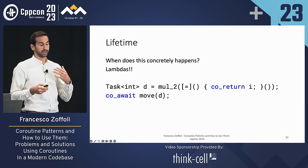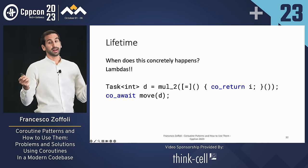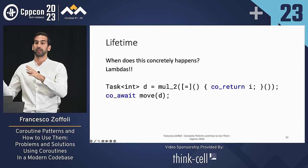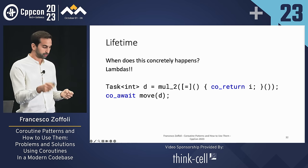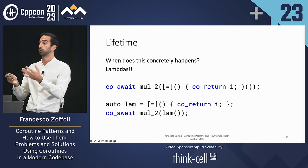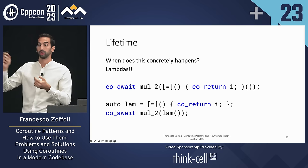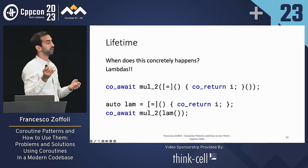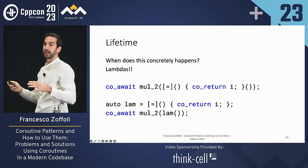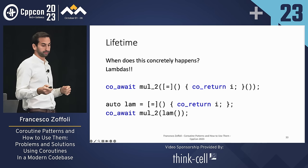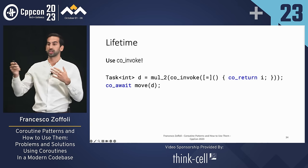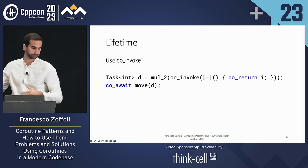Another situation where this happens is with lambdas. We need to remember that lambdas are actually a struct with an operator call. So if we create a lambda, call the operator, and the lambda is destroyed at the end of the expression, when we move into the task we're accessing local state that's been destroyed — this is an error. The solution is to either co-await the lambda immediately, or assign the lambda to a local variable and invoke that. If your lambda has no captured state, that's also fine. Another option is to use co-invoke, a function offered by the Folly library which ensures the lambda lives for the duration of the task.